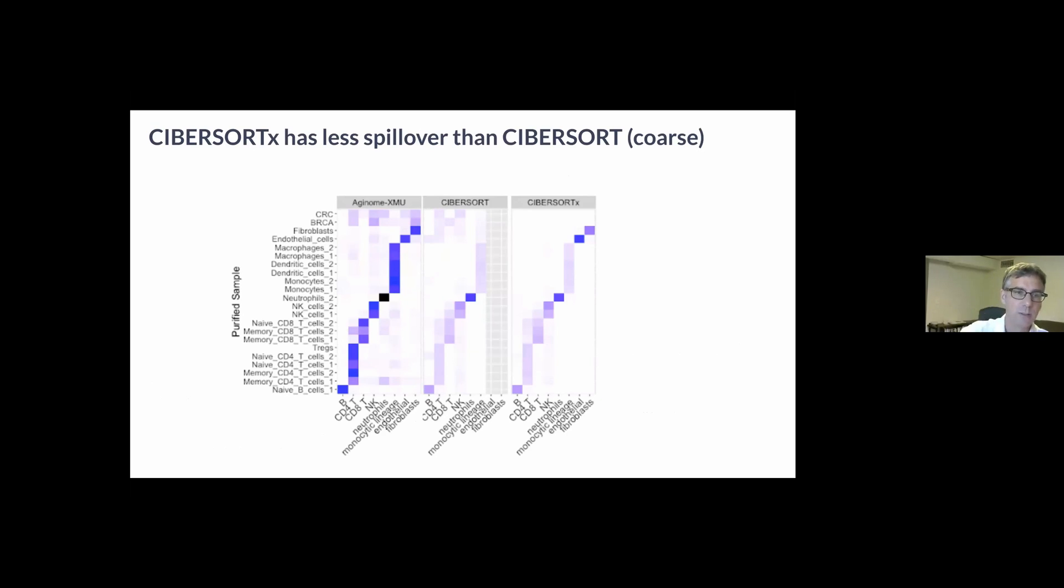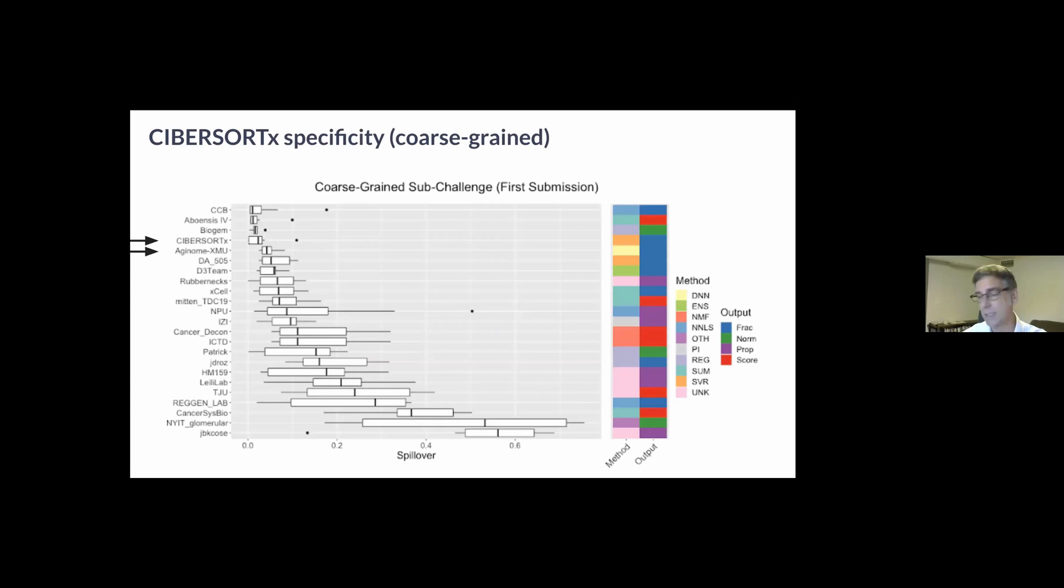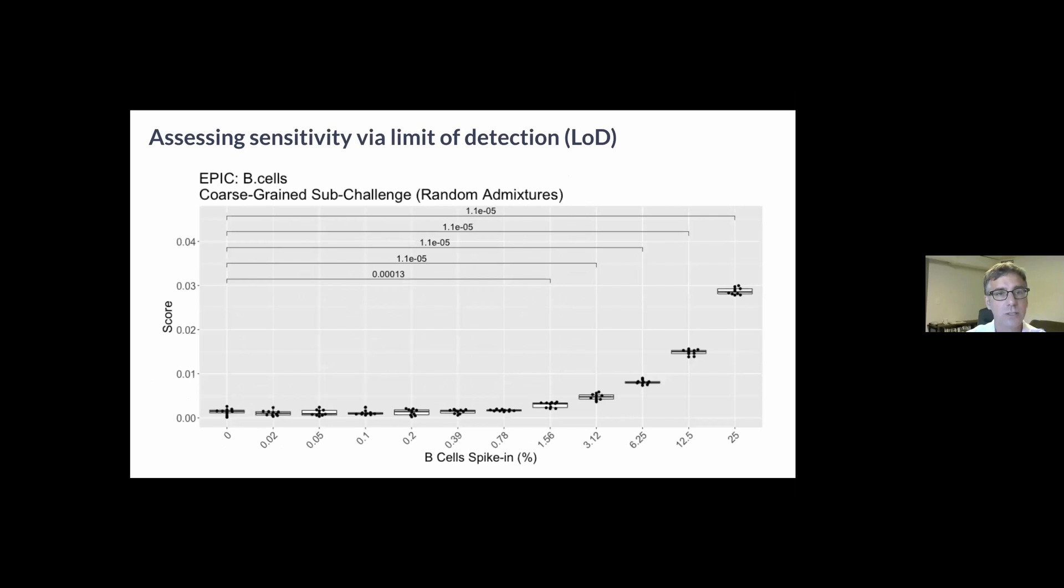All three of Axonome XMU and the two CIBERSORT methods had relatively high specificity, which can be seen here for the individual cell types in the coarse-grain challenge, in particular by the presence of the strong diagonal where I've ordered both the rows and the columns consistently with one another. You can see the aggregate performance here across all cell types.